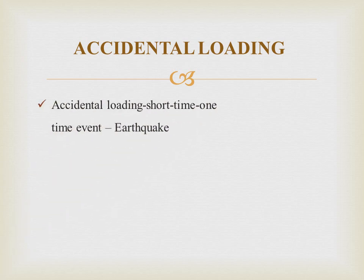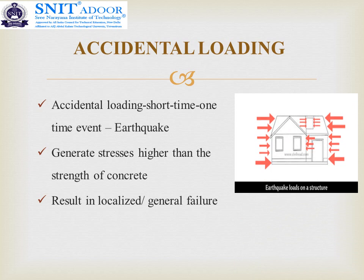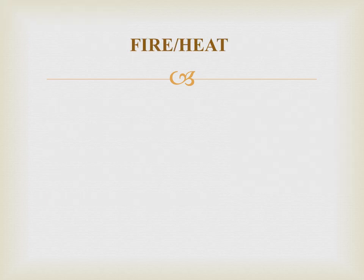Next is accidental loading. In the case of structures, sources of accidental loading include wind, flood, earthquake, and blast — most of which are naturally occurring calamities. Accidental loads are usually short-time, one-time events like earthquakes. They generate stresses higher than the strength of concrete, resulting in localized or general failure. A building is typically designed for vertical loads — dead load and live load — but during an earthquake, horizontal loads are induced, leading to building failure.